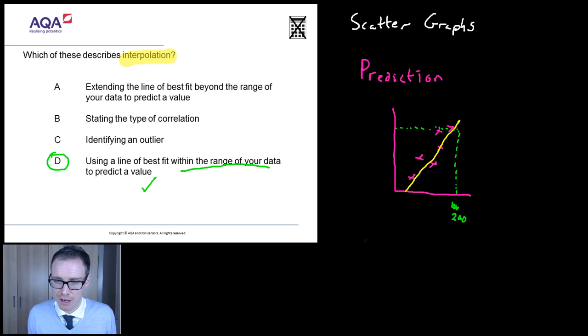Imagine if your scatter graph looked like this. I don't know why I keep going to this brown color. Anyway, imagine your scatter graph was like that. And you drew yourself a lovely line of best fit.